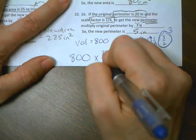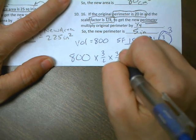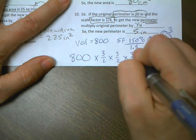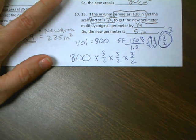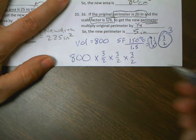That's actually times 3 over 2, times 3 over 2, times 3 over 2. And then you're going to reduce as you go.